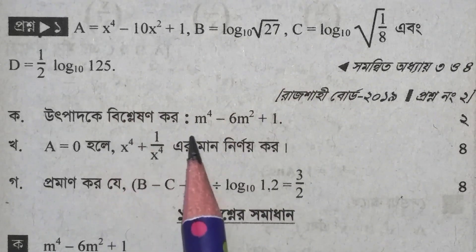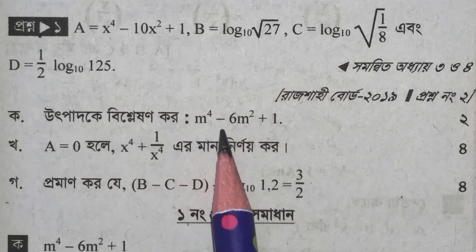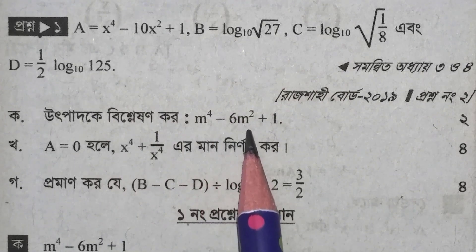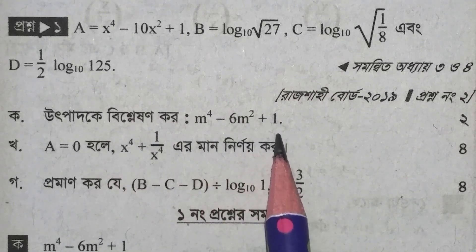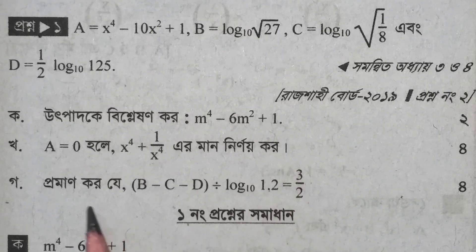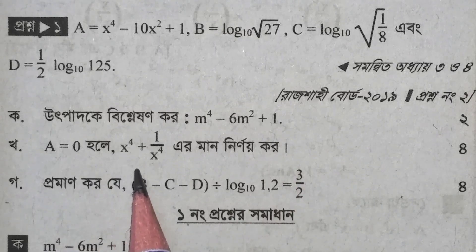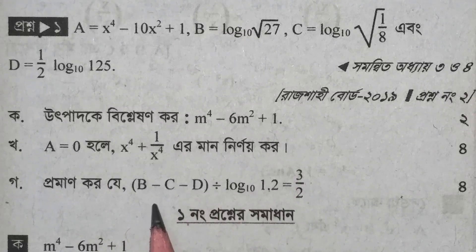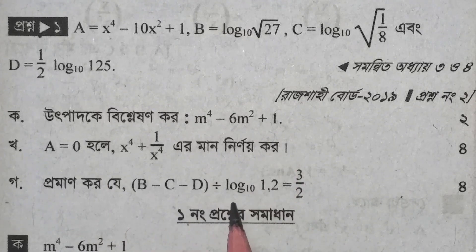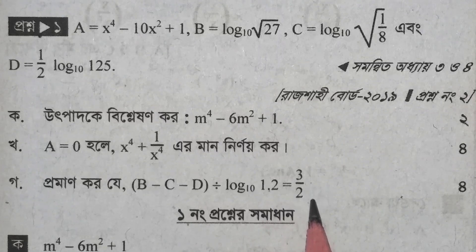The problem is to factorize m to the power 4 minus 6m squared plus 1. Here, when the product is set equal to zero, x to the power 4 plus 1 by x to the power 4 is equal to b minus c, and log 10 to the power 1.2 is equal to 3 by 2.